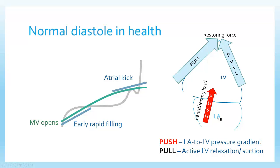That's called the push function. The other major force is called the pull function, or restoring force, created by active left ventricular relaxation — suction. In health, this is the predominant force that causes the left ventricle to fill — it accounts for almost all of the reason the left ventricle fills. When patients develop left ventricular or left atrial pathology, the push function becomes increasingly important. When people have really high left atrial pressures, it's the push function that starts to predominate. There are two major reasons the LV fills: the pull function (active relaxation of the myocardium) and the push function (pushing of blood from the left atrium into the left ventricle).